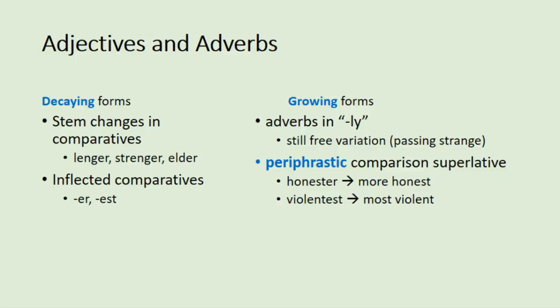Part two of Early Modern English Grammar — now we're going to talk about adjectives, adverbs, and verbs. We can talk about linguistic growth and decay: different languages or dialects growing — getting more speakers — or decaying, getting fewer speakers, and sometimes dying out completely. The same is true of particular forms within a language.